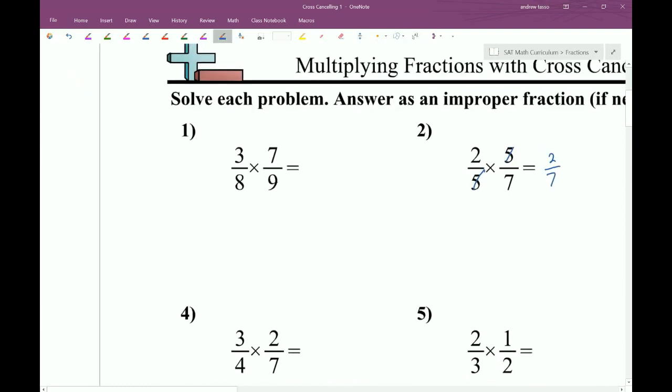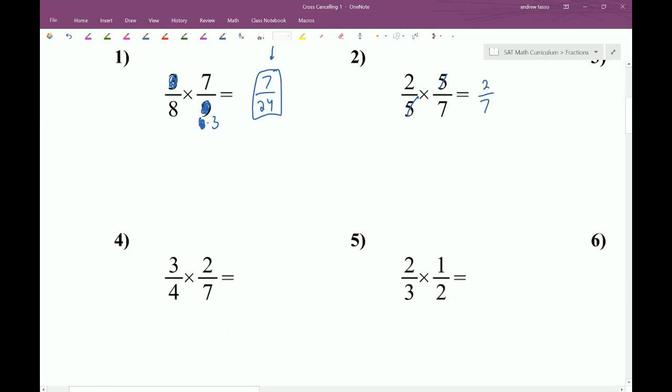When you have a question like number 1 here, this 9 can be broken down into 3 times 3, and then one of these 3s can be canceled. So you end up with 7 over 8 times 3 is 24. The benefit of doing it this way is that if you're careful enough to cancel out all the common factors, then you know that you won't have to reduce this final result. So this method is definitely worth practicing. It'll save you a lot of time and effort.